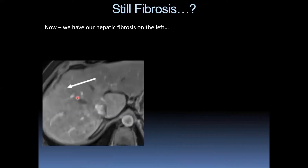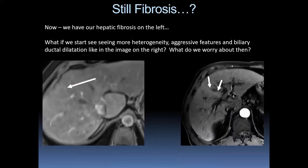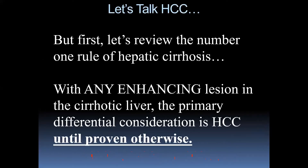Here we have hepatic fibrosis on the left. But what if we start seeing more heterogeneity, aggressive features, and biliary ductal dilatation like the image on the right? It looks similar but now it's getting more aggressive — we have biliary ductal dilatation. What are we worried about then? Not just fibrosis, but cholangiocarcinoma. If fibrosis starts looking more aggressive, start thinking about cholangiocarcinoma.